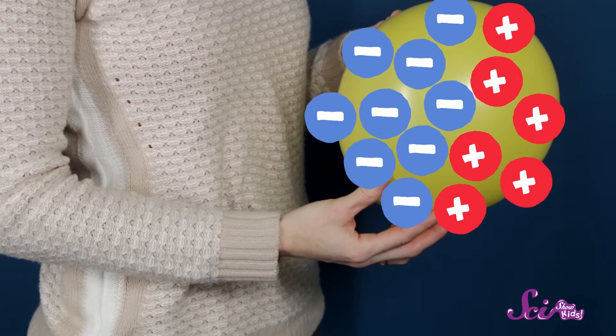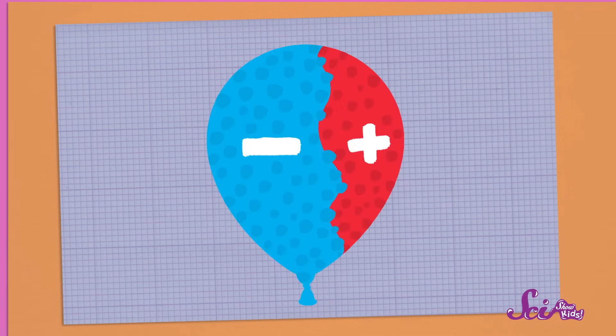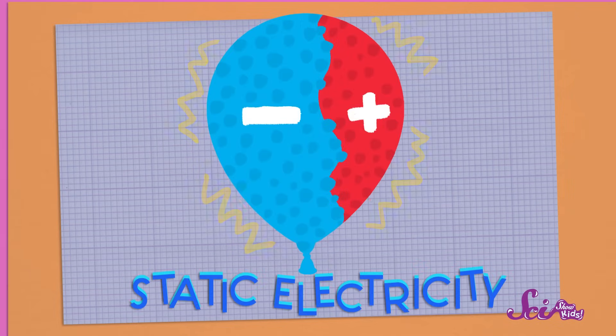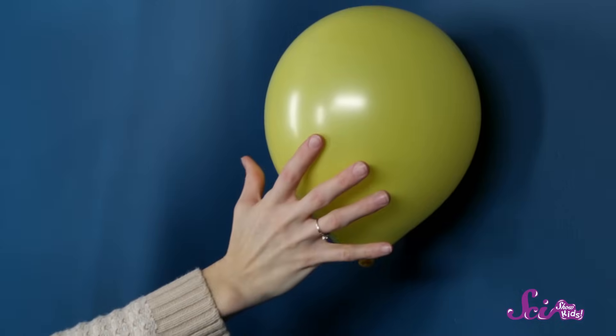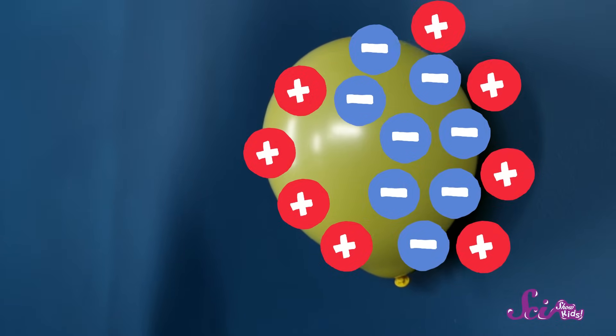Now the balloon has extra negative particles. And when there's an imbalance of positive and negative particles in things — like when the balloon has more negative particles than positive ones — it's said to create static electricity. And when I put the balloon next to the wall, those extra negative particles are attracted to the positive particles in the wall, and the balloon sticks to the wall.